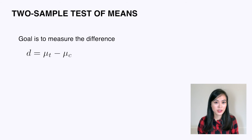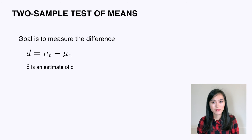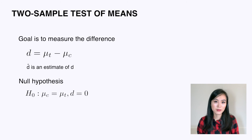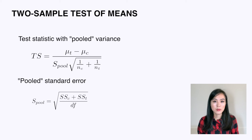Our goal is to measure the difference d between the average number of posts in control (mu_c) and treatment (mu_t). I call the estimate d-hat. Under the null hypothesis, d, the true difference, equals zero. The test statistic of a two-sample t-test with pooled variance is given by this formula, where s_pool is the pooled standard error, calculated using the formula shown here.